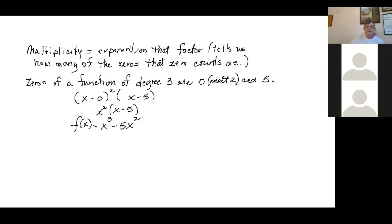It's a third degree function right here. Two of the zeros are zero and one zero is five.